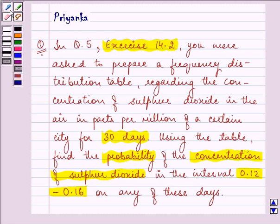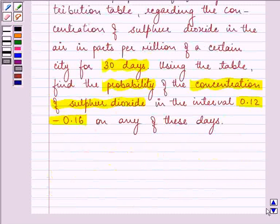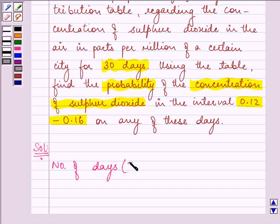Now if you refer back to this question first of all the number of days that is the total is given to us as 30 days and if you look at the frequency distribution table